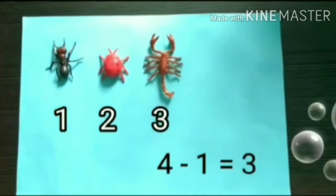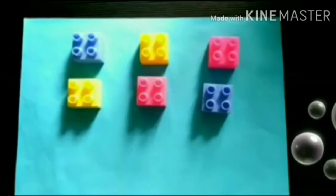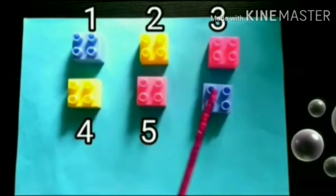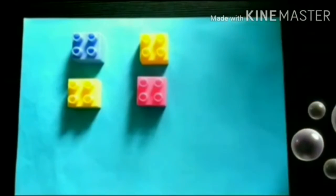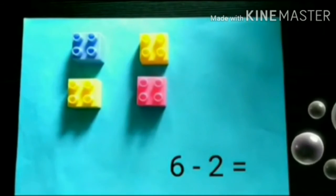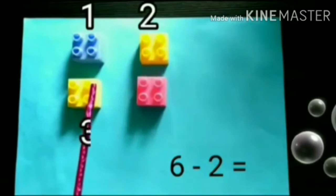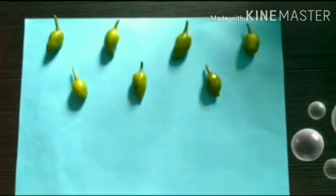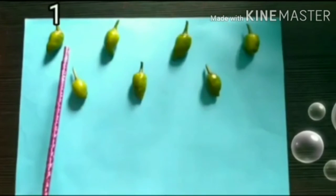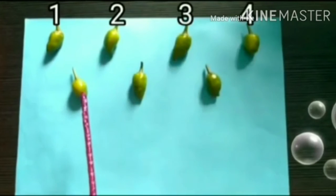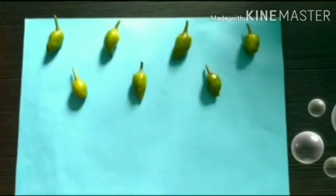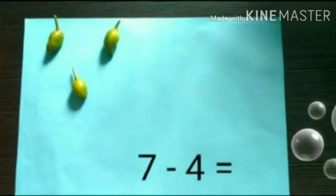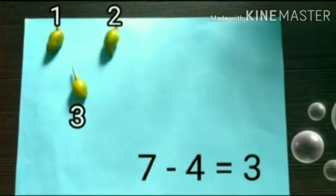Next — how many blocks do we have? We have 1, 2, 3, 4, 5, 6 — six blocks. If I take away two blocks, how many blocks are left now? 1, 2, 3, 4 — four blocks. Yes. Next — see here, how many chillies are here? Yes, there are 1, 2, 3, 4, 5, 6, 7 — seven chillies. Okay, now I take away four chillies. So how many chillies are left? 1, 2, 3.